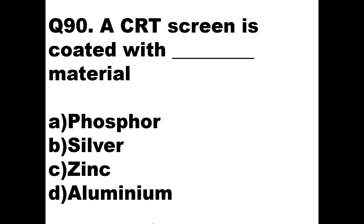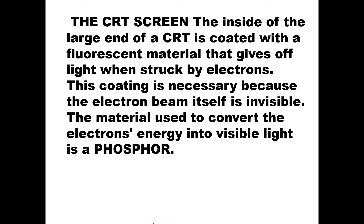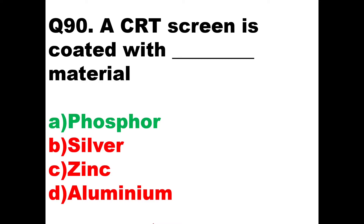Question number 90. A CRT screen — which is used in your CRO — is coated with what material? In the CRT screen, whenever the electrons hit the material, a light should come out and an image should be shown. The material used is phosphor, so option A will be the right answer. The inside of the large end of the CRT is coated with a fluorescent material that gives off light when struck by electrons. This coating is necessary because the electron beam itself is invisible. The material used to convert the electron's energy into visible light is phosphor. So option A, phosphor, is the answer — the CRT screen of the CRO is coated with phosphor material.